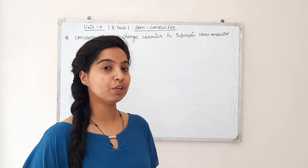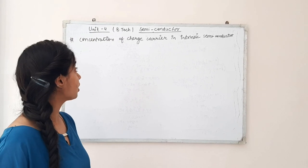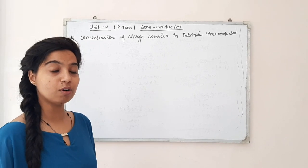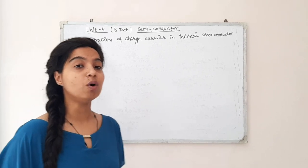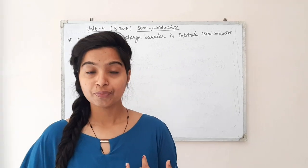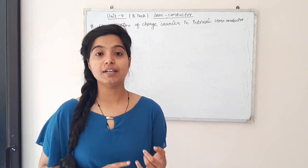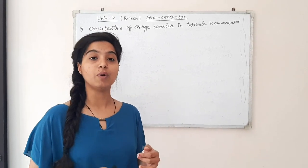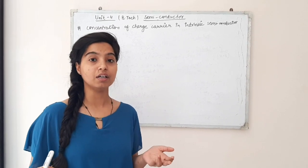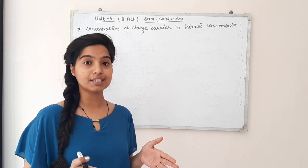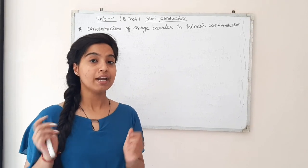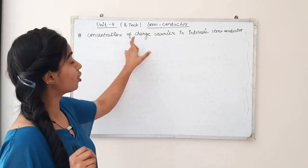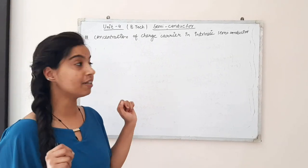Good morning dear students. Today we are here with the topic: charge carrier concentration in intrinsic semiconductor. It is a topic of unit 4. Till now we had discussed what are the conductors, insulators and semiconductors, what are intrinsic semiconductors, what are extrinsic semiconductors, and their properties. Now the topic covers the concentration of charge carriers in intrinsic semiconductor.